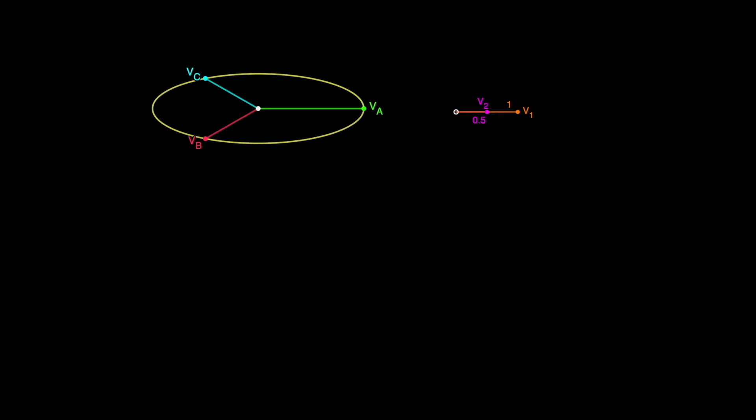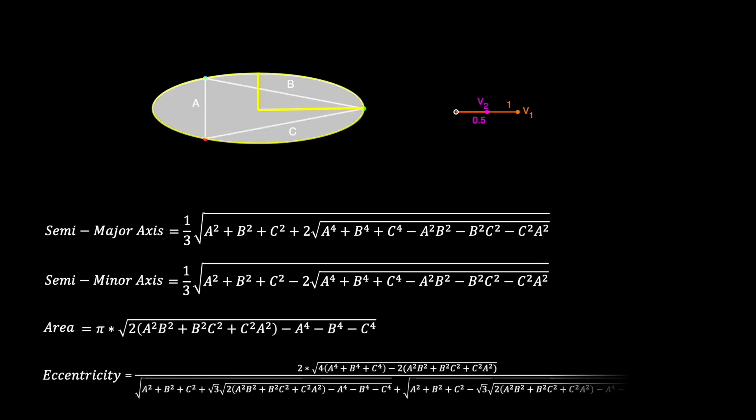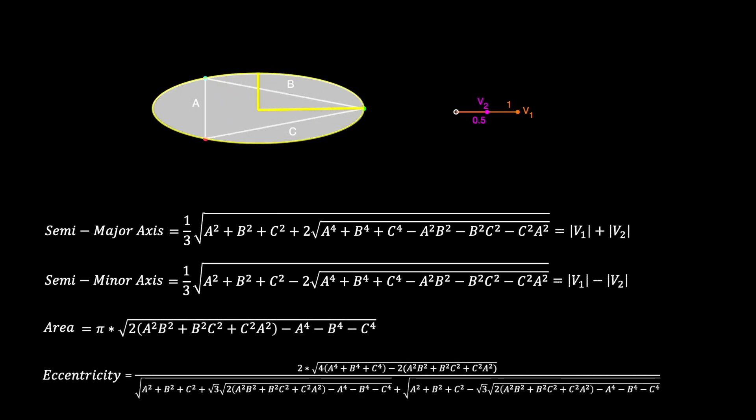I went back to the original equations for the Steiner ellipse, which used the side lengths of the triangles, here I'm showing as a, b, and c, and I converted them to equations based on the v1 and v2 magnitudes. The cancellations that occurred were remarkable, and the ellipse seems almost meant to be described by using symmetrical components.